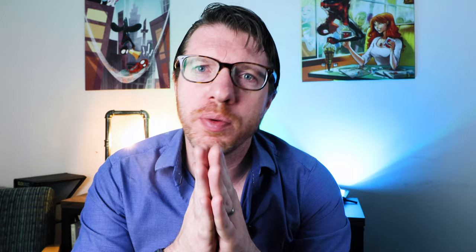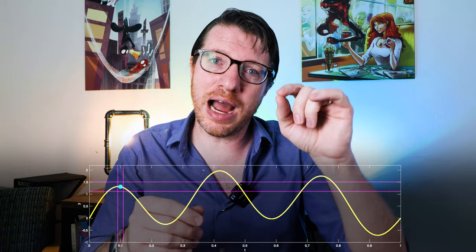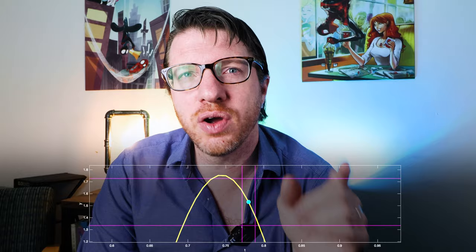Uniform continuity is one of these really nice ideas that comes with compact sets. If we take a look at f(x) and take epsilon greater than 0, we can find delta such that the output doesn't move more than epsilon as long as we stay within delta of x — but that delta could vary with x. Uniform continuity says there is a single delta that works for all points in our domain. It turns out that if you take a continuous function over a compact set, it is automatically uniformly continuous.